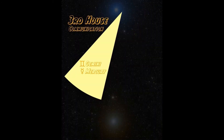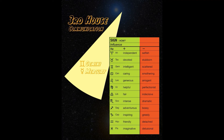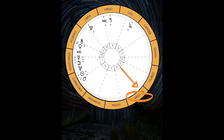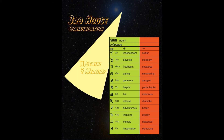So even if you don't have any placements, you have a sign that rules your house, and the signs are how you approach this part of your life. To find the ruler of your house, look at the outer ring and look at whichever sign starts at the cusp. This is how the signs of the third house use communication.